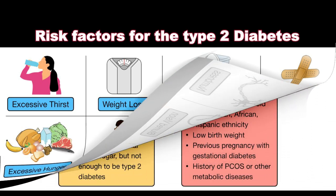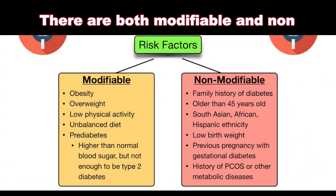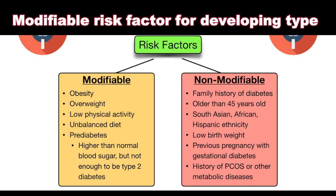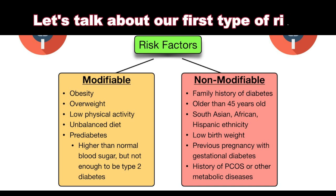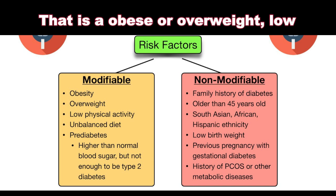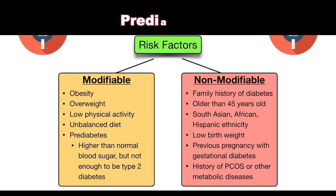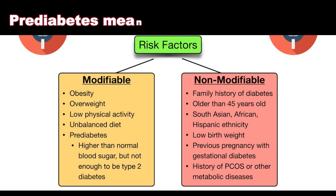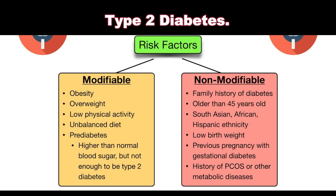Let's see the risk factors for type 2 diabetes. There are both modifiable and non-modifiable risk factors. Modifiable risk factors include obesity or being overweight, low physical activity, unbalanced diet, and prediabetes — meaning higher than normal blood sugar levels but not enough to be considered type 2 diabetes.